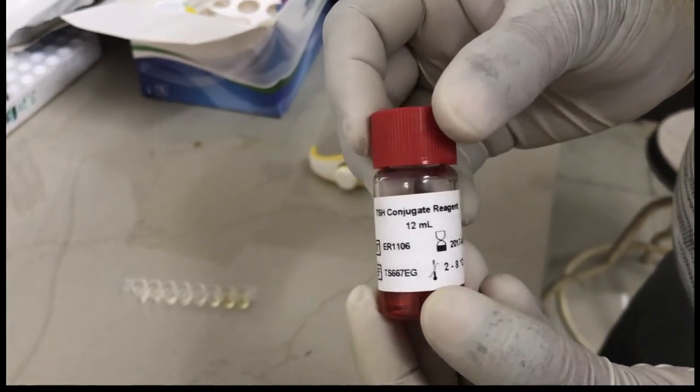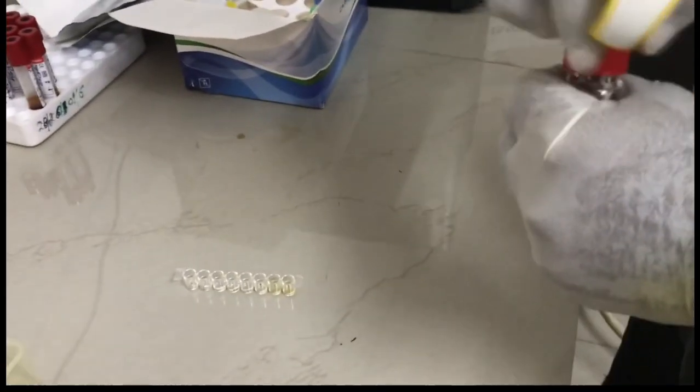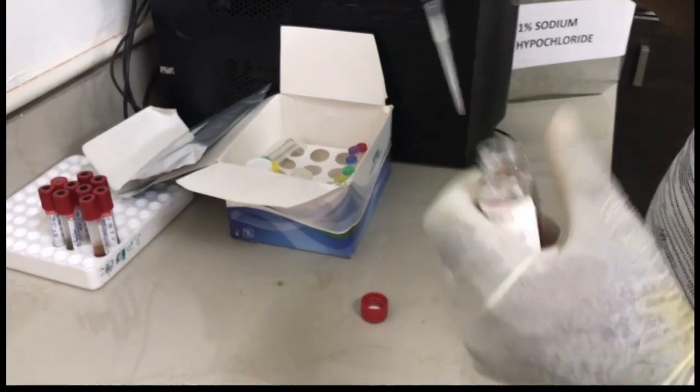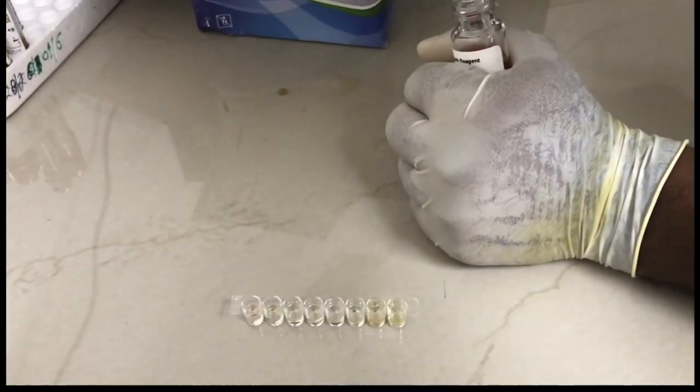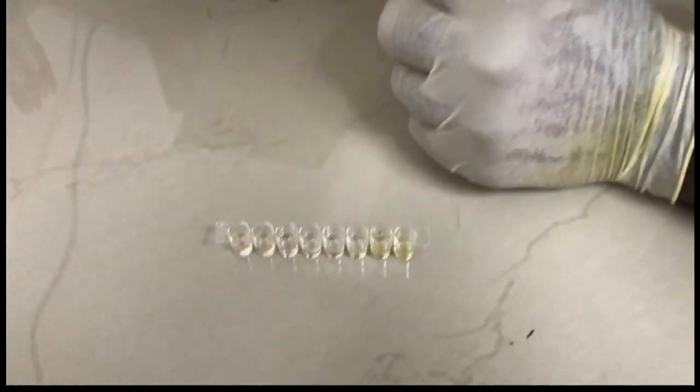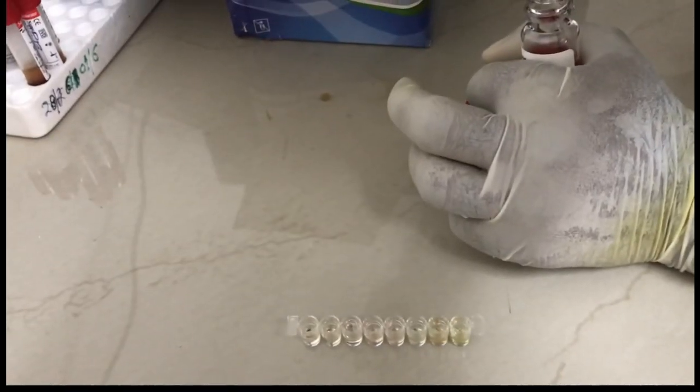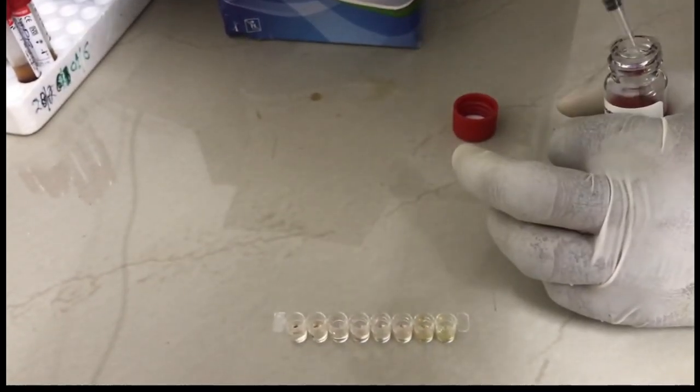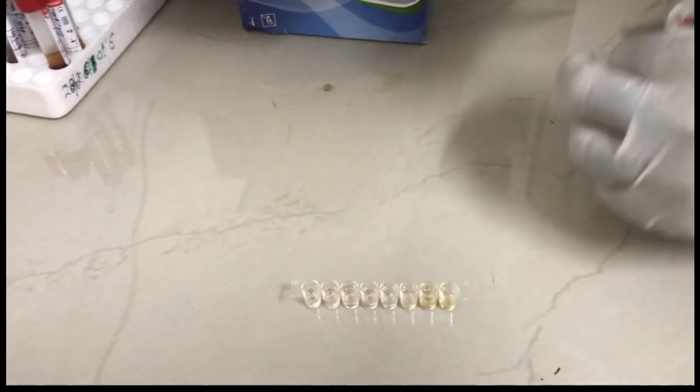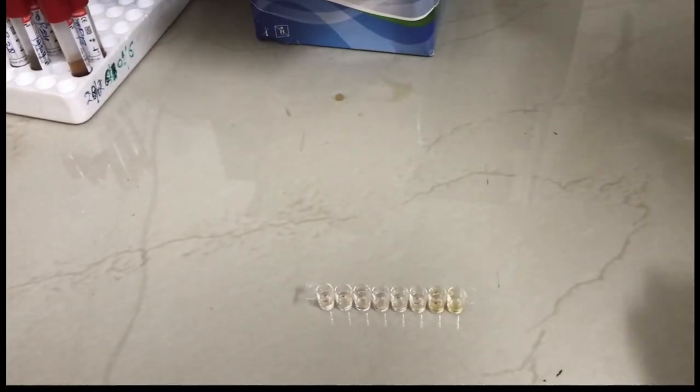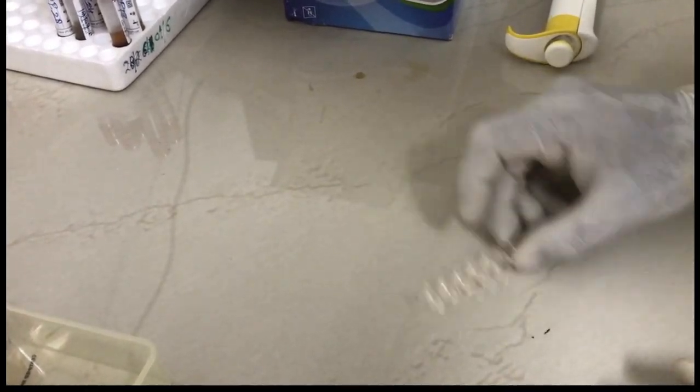Now we are taking step two: conjugate reagent of TSH. 10 microliters each will be added by this pipette, and it will be added to each well. This is TSH conjugate as you can see here. Very finely, this work has to be done. Now the addition of the conjugate has been done, and this has to be incubated for 60 minutes. We will keep it at room temperature for one hour, and we will do the third step after the completion of one hour.